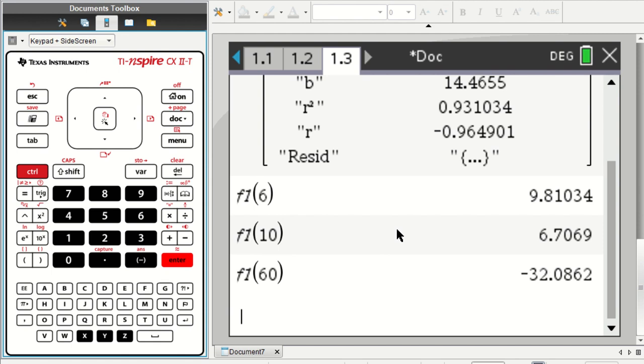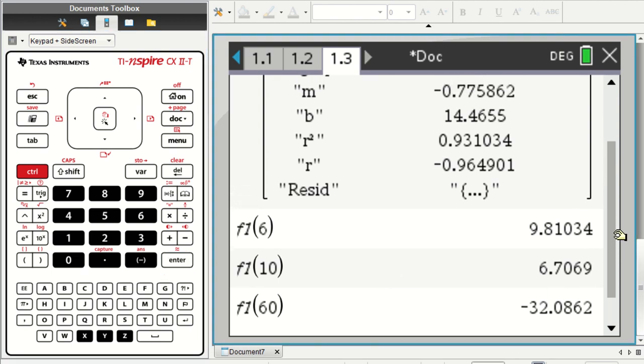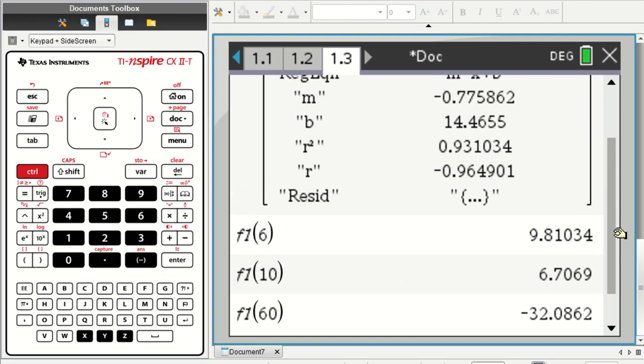All right, the last thing I want to do is kind of scroll back up here for a moment and look at our coefficients again. Let's say I want to know how long will it take for zero turtles to be on the log. So we have the coefficient, the coefficients, the slope, the x coefficient is negative 0.776. And the y-intercept is 14.5, let's say.